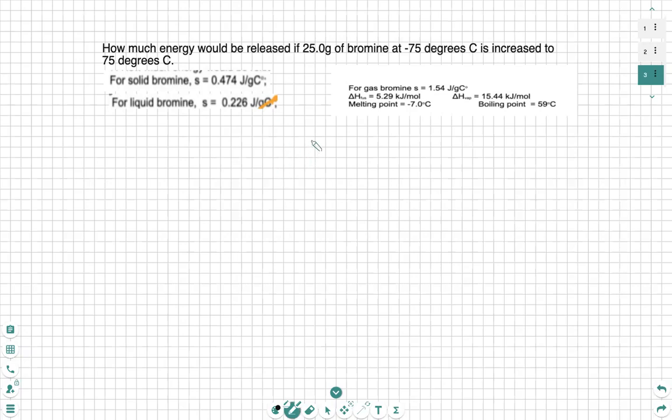The first part is we have negative 75 degrees. We need to bring that to, as a solid, we need to bring that to its melting point. And we can see here the melting point is at negative 7 degrees Celsius for bromine. So we can say, alright, I need to take this negative 75 degrees to negative 7 degrees Celsius, and that's going to be my Q1.